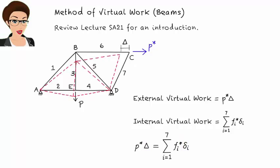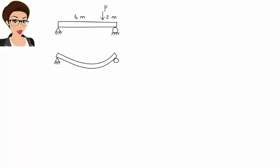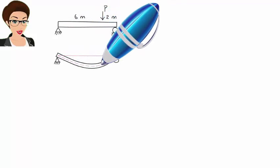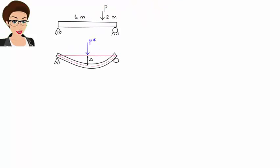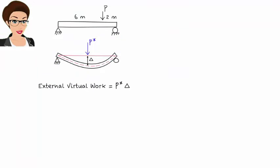Now let's turn our attention to beams. Say we have this simple beam. Here is how the beam is going to deflect under the load. Suppose we want to determine the vertical displacement at mid-span. To do so, we should place a virtual load at the midpoint of the beam where deflection is denoted by delta. Then the expression for external virtual work can be written as P star times delta.